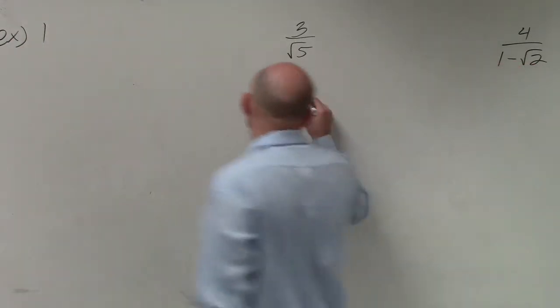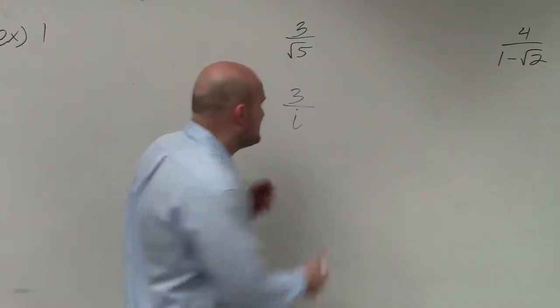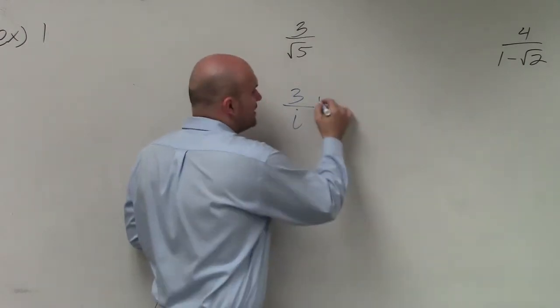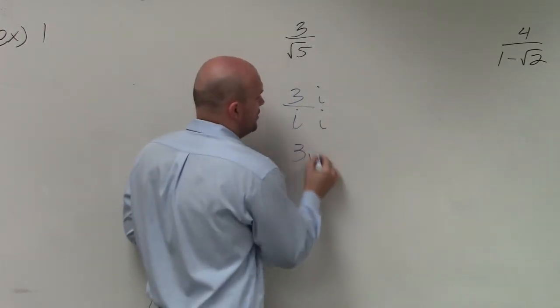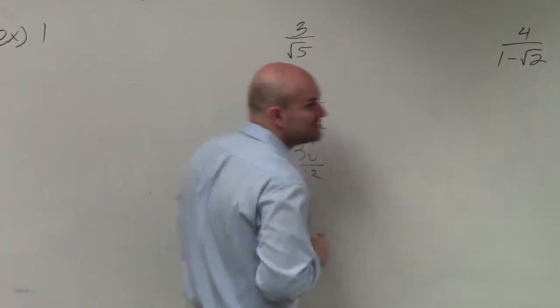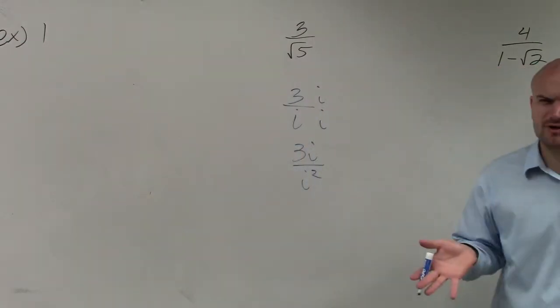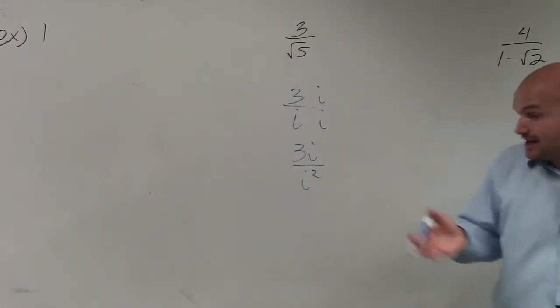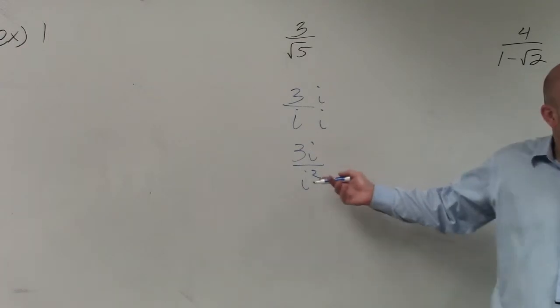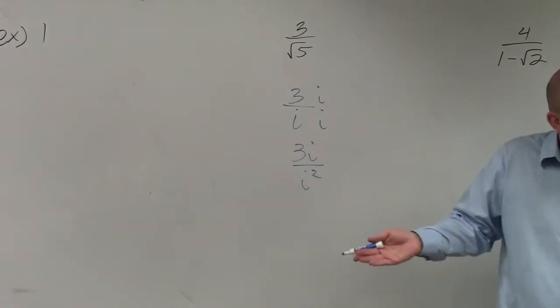Just like when we had an example over here, when I had 3 over i. Now the whole purpose of multiplying by i, if you guys remember on the top and the bottom, Justin, was that we would have i squared. Because what did i squared rewrite to? Negative 1, right? So I could replace i squared with negative 1, and then there was no more i in the denominator, right?